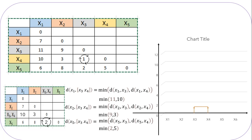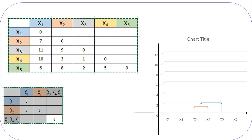The value 2 is the least distance, which is between data point x5 and cluster x3-x4. So we will draw a dendrogram for cluster x3-x4-x5 at a height of 2. Let's create a new matrix table by considering the cluster of x3-x4-x5.